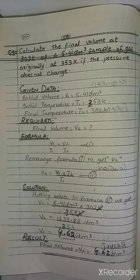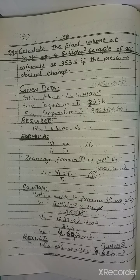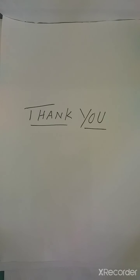Dear students, the remaining three numericals in the exercise are your homework. I have used Boyle's Law and Charles's Law here — you have to solve the rest yourself following the same steps. This is the end of Chapter 5: Physical States of Matter. I hope you have understood all the topics well. The remaining exercise questions are explained in your notes. Thank you. Stay home, stay safe.